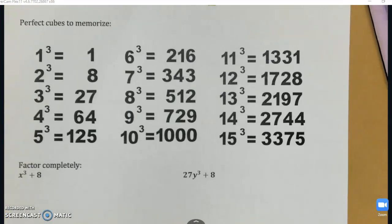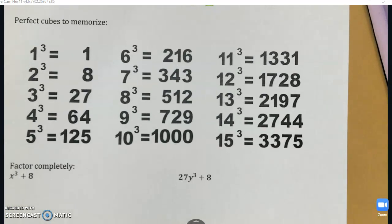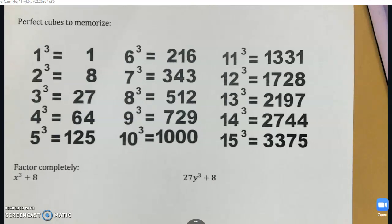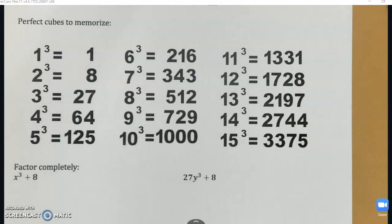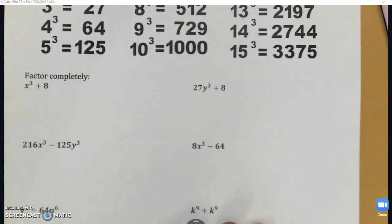Now, in order to recognize when you have perfect cubes, you need to memorize your first, I would say, up to 10 perfect cubes. This list goes up to 15, as you can see. But memorizing your perfect cubes is how you're going to be able to recognize when you have a sum or difference of cubes. So let's jump into some examples.